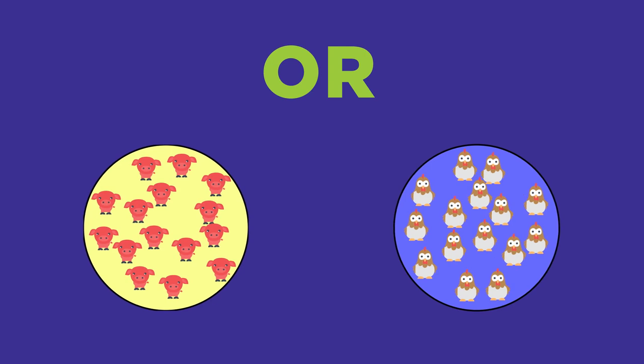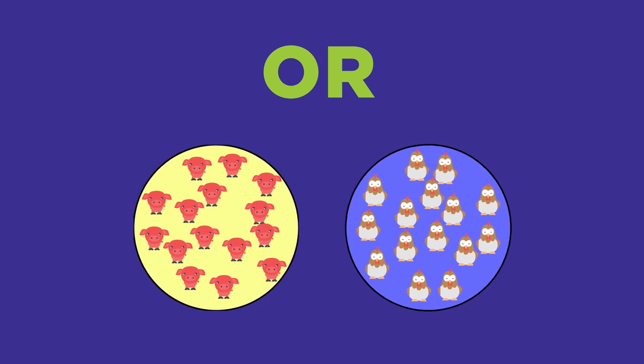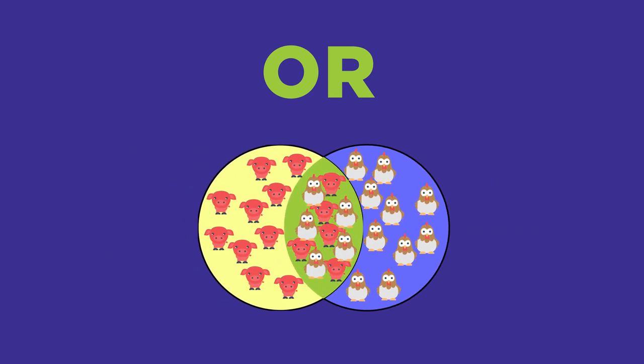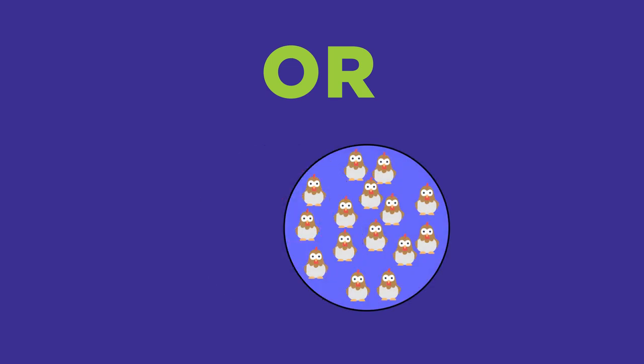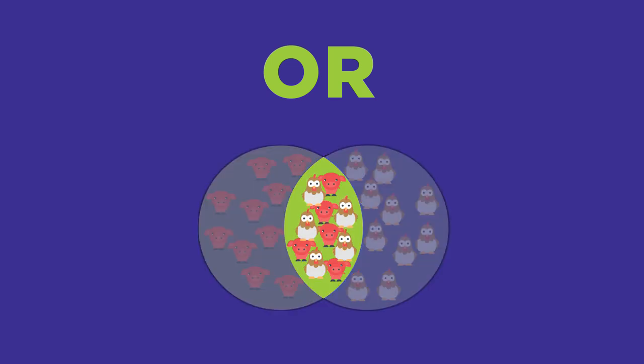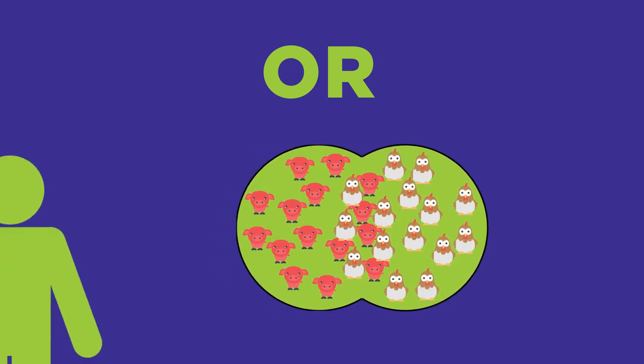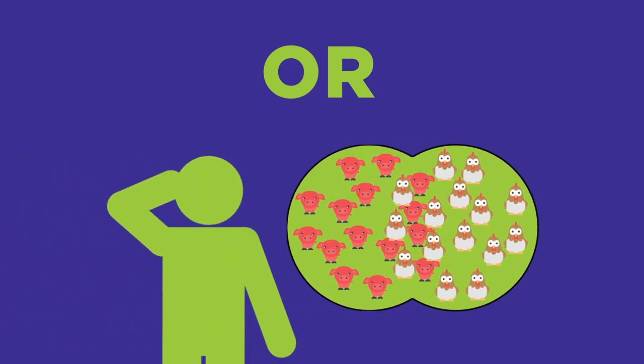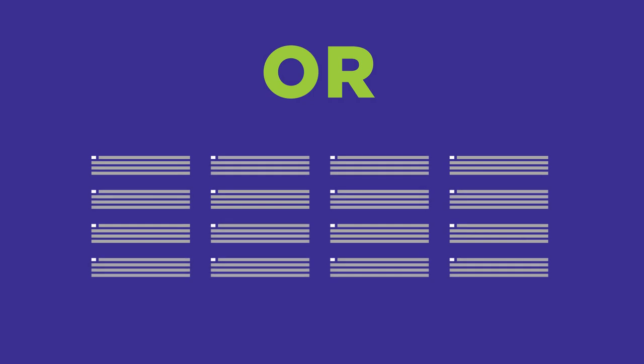The next Boolean operator is OR. Here's how it works: using OR between two search terms tells the system to include results that have one term OR the other term OR both. This broadens your search to get more results. OR gives you more.